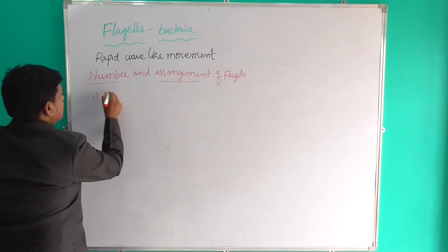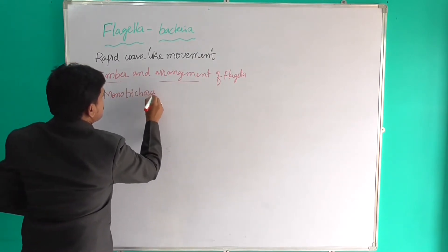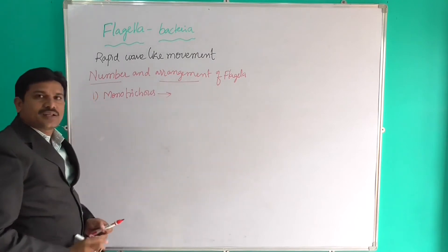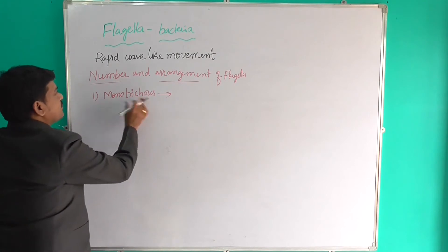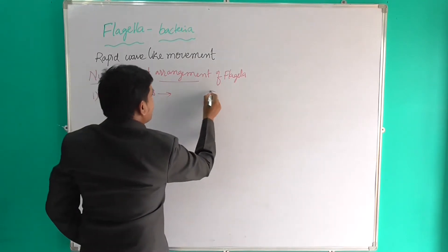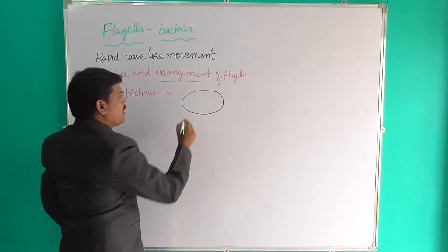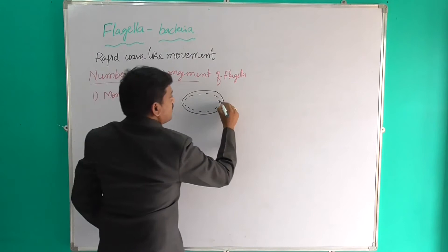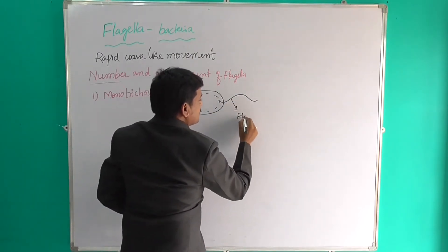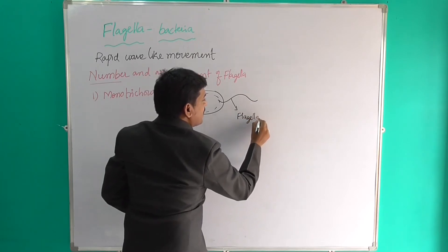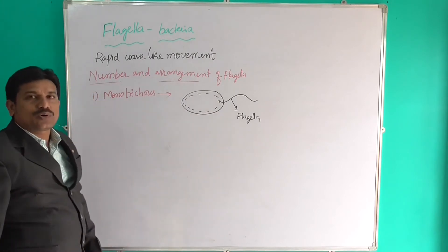The first type is monotrichous. Mono means single — a single flagella is present. See this diagram: here one pole on this side, one pole on that side. A single flagella which is present at a single polar side is called as monotrichous.